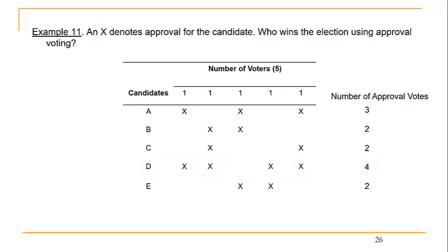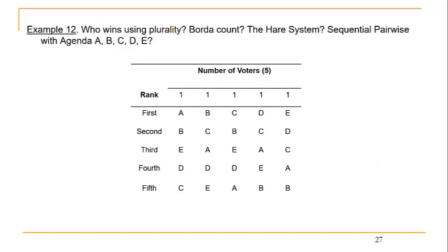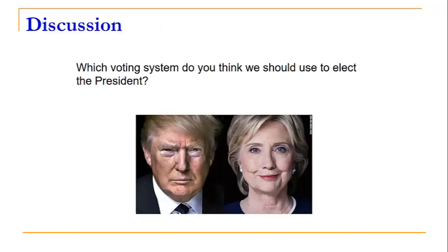We've now discussed all five voting methods and also the Condorcet method. I encourage you to look through the problems in the handout posted on Blackboard to practice all of these methods together. Think for yourself which voting system you like best and which we should use to elect the president. The method we currently use is most closely related to plurality. Consider whether the Borda count, the HAIR system, or approval voting might give a result that feels more fair.